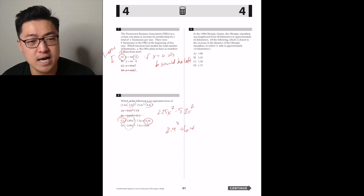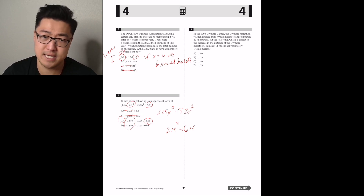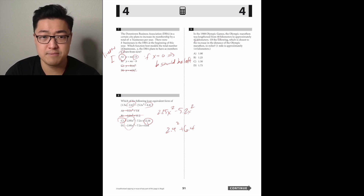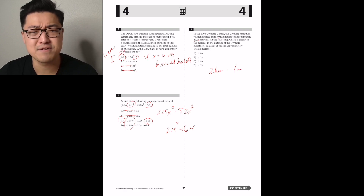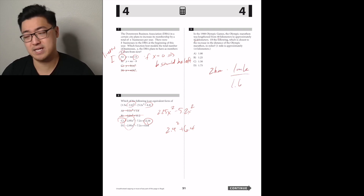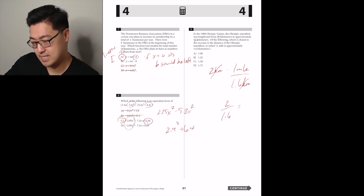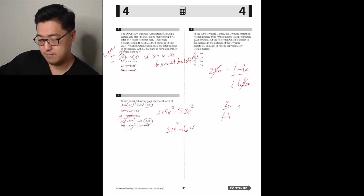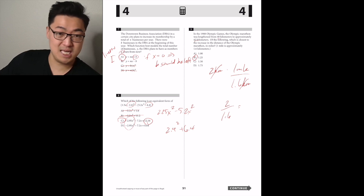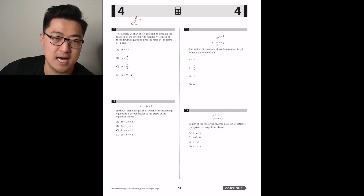In the 1908 Olympic Games, the Olympic marathon was lengthened from 40 to approximately 42 kilometers. Which is closest to the increase in distance in miles? Two kilometers converted into miles — the conversion rate is one mile equals 1.6 kilometers. So make a conversion ratio: two kilometers times one mile over 1.6 kilometers equals two divided by 1.6, which is about one and a quarter. Answer B.